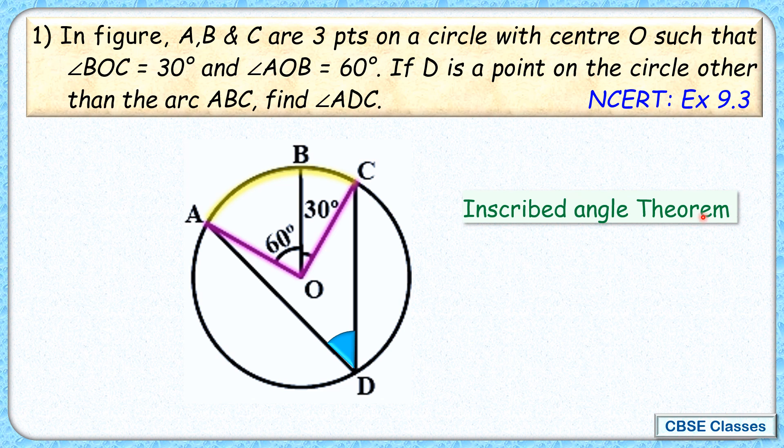we can say that if an arc is subtending angle of 90 degrees at the center, then in the remaining part of the segment, it will subtend half of that angle. So 90 is 45 degrees.